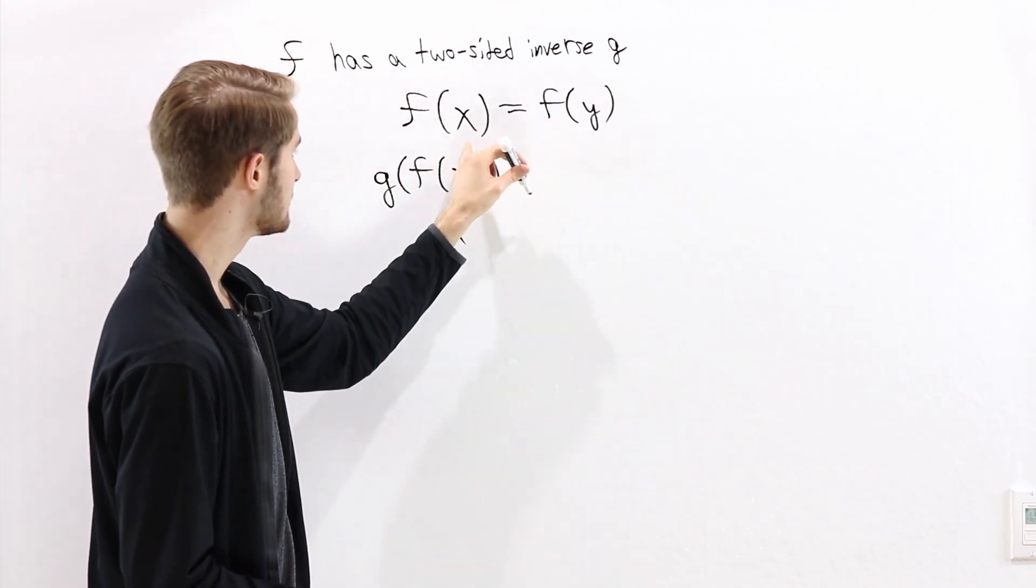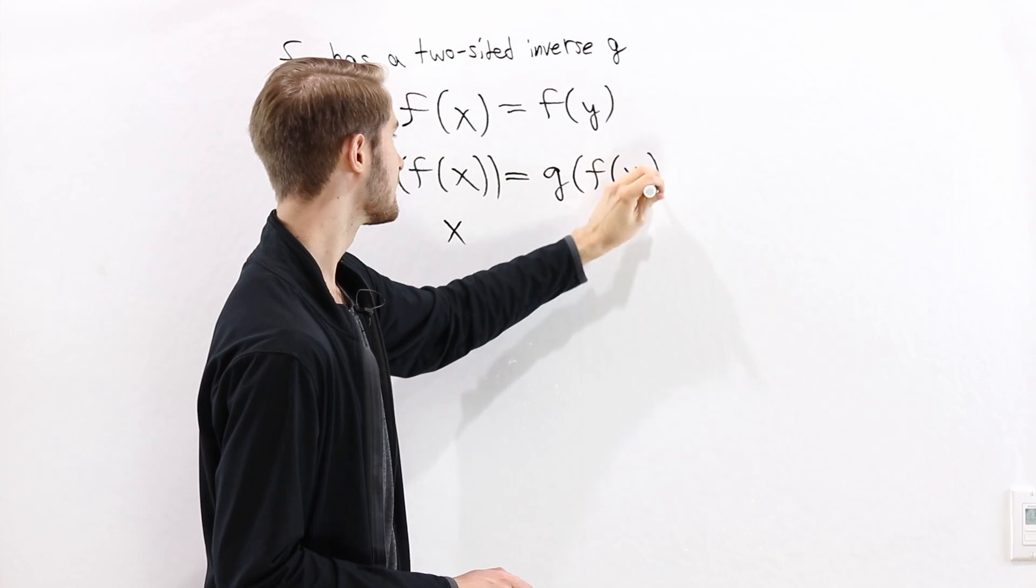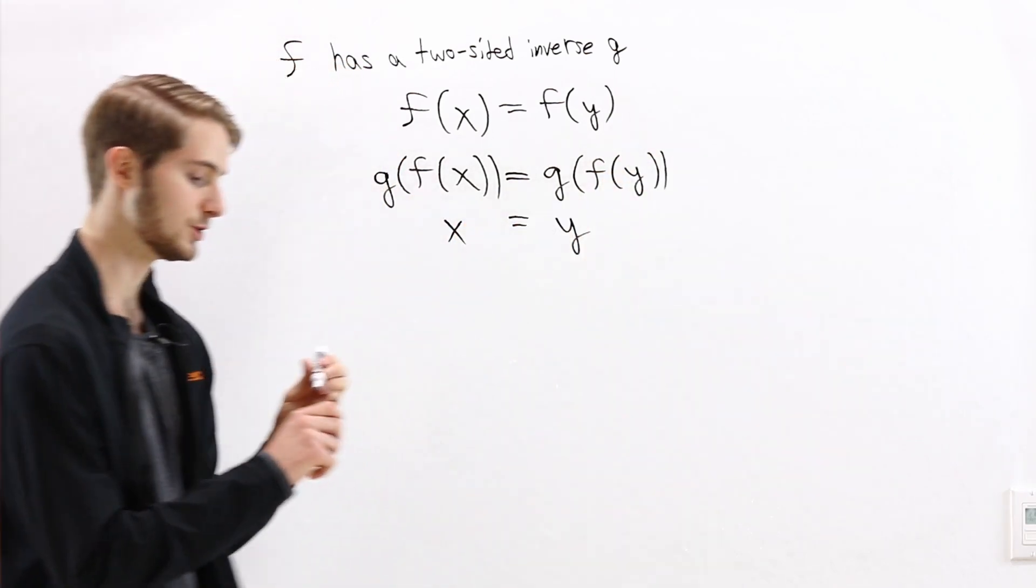Now what that means is that if we start with this equation up here, and we take g on both sides, then the g and f cancels out, and we're left with x equals y.